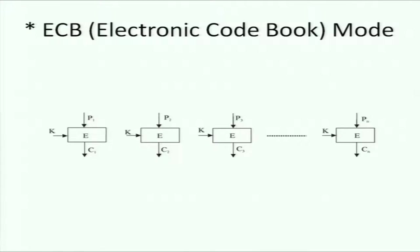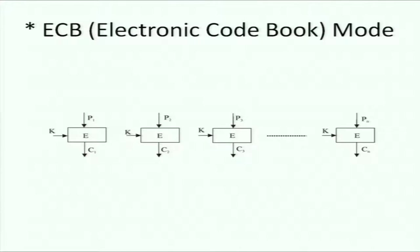Exactly — if the input is the same, the output will be the same. If I know the plaintext-ciphertext pair P2, C2, and I observe that C2 equals C5, I can conclude that P5 equals P2. This is a known plaintext attack. So ECB mode is bad news — can we do something better?